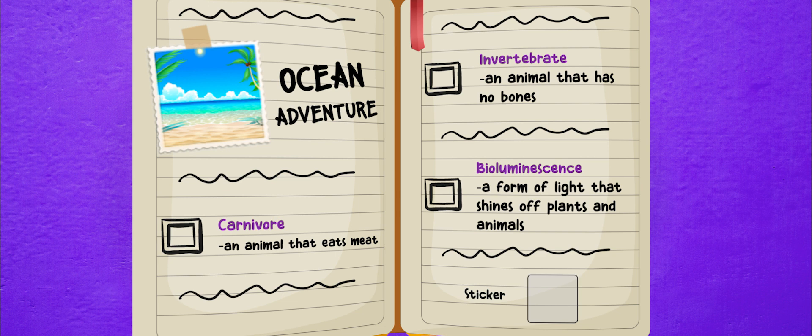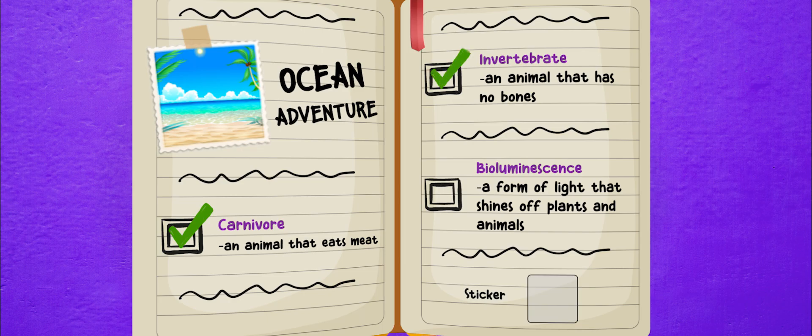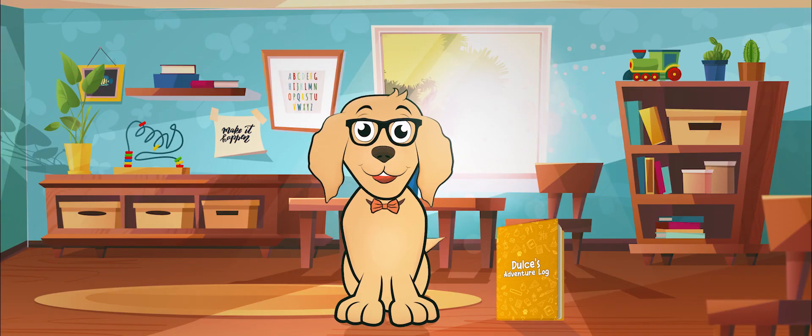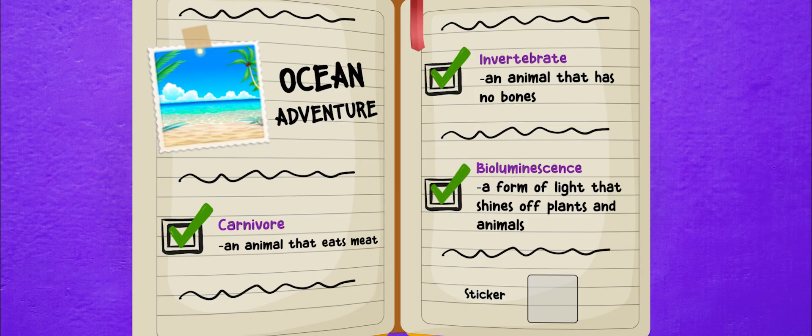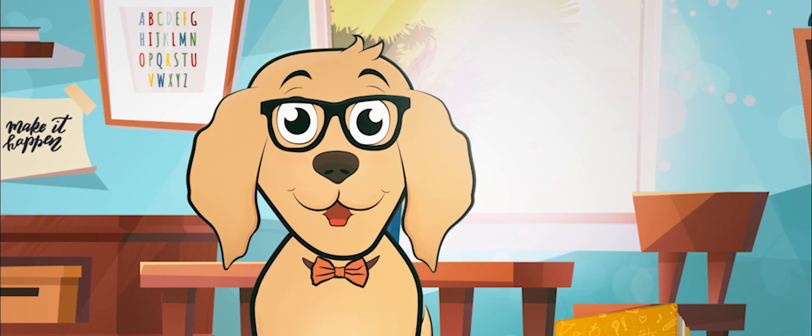One for a carnivore, another for an invertebrate, and lastly, one for bioluminescence! We marked three boxes! That's exactly what we needed for my adventure log's ocean sticker! Woohoo!